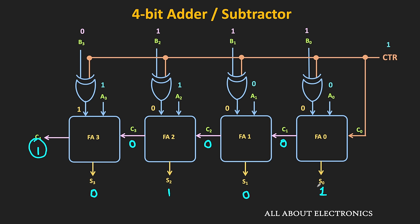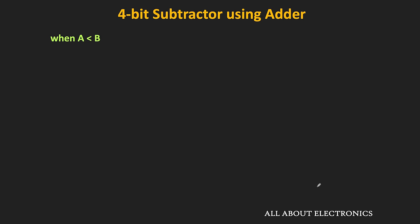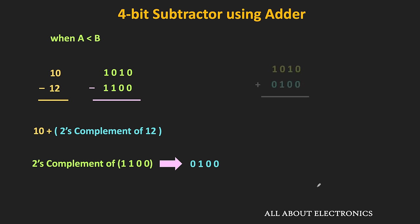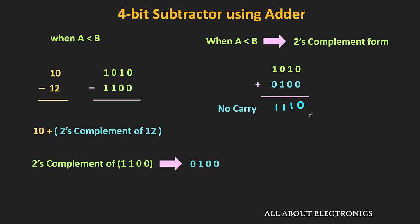So far we have only assumed that A is greater than B. But we can also have the case where A is less than B. Let us consider this scenario. Let the number A equal 10 and B equal 12. In binary, that is 1010 and 1100. Using the 2's complement form, we add 10 with the 2's complement of 12. The 2's complement of 12 is 0100. Effectively we are adding 1010 with 0100. The result gives 0 plus 0 equals 0, 1 plus 0 equals 1, and in the next two columns we also get 1. But as you can see, the outgoing carry is equal to 0, which indicates that the result is in the 2's complement form.